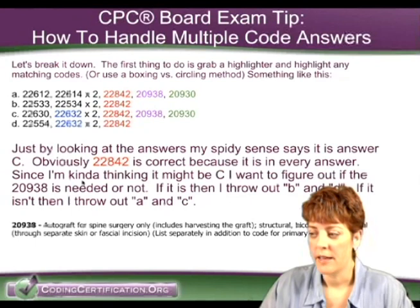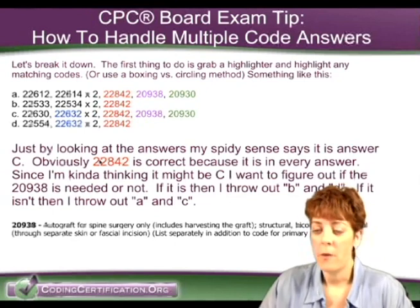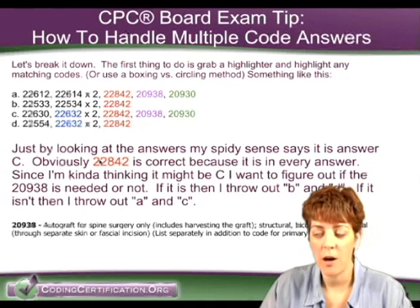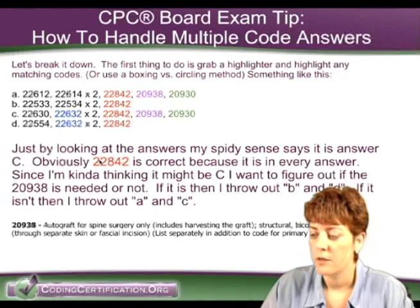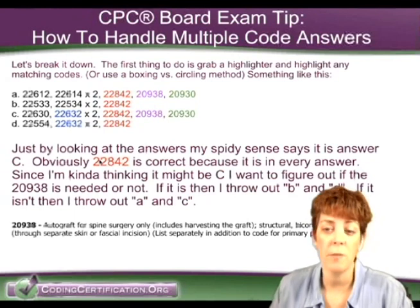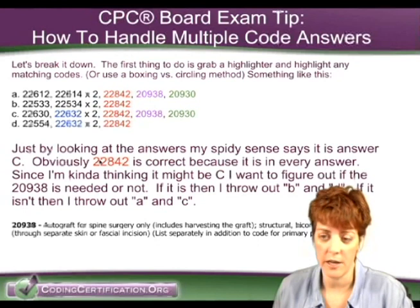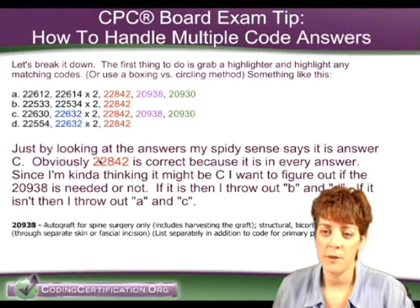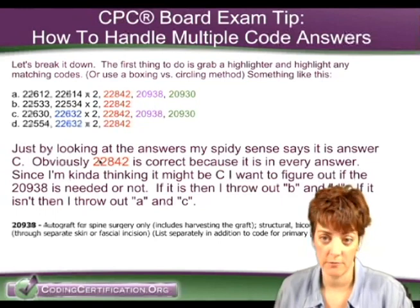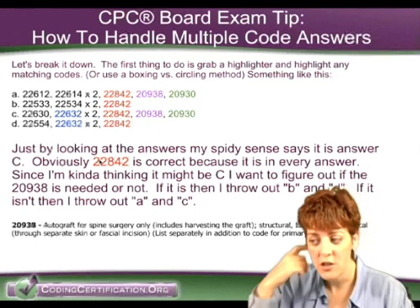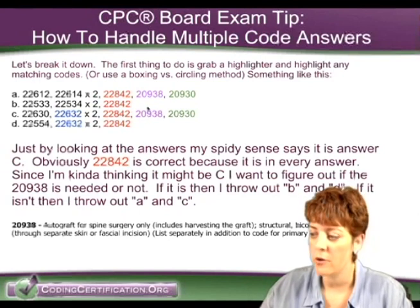So just by doing that, I think the answer is C. I don't have the question, and that wasn't the point of the slide — it was just to show how you can attack a multi-code answer on the board exam. Since the majority of people on this call are not yet certified and are planning to sit for the board exam, try this method. Originally my advice was to look up every answer before you read the scenario, but you just don't have time for that anymore, especially for 2012. The feedback I'm getting is that a lot of exams have these multi-code answers versus just one code per answer. You've got to look for patterns so you can figure out how to throw out two of the four.